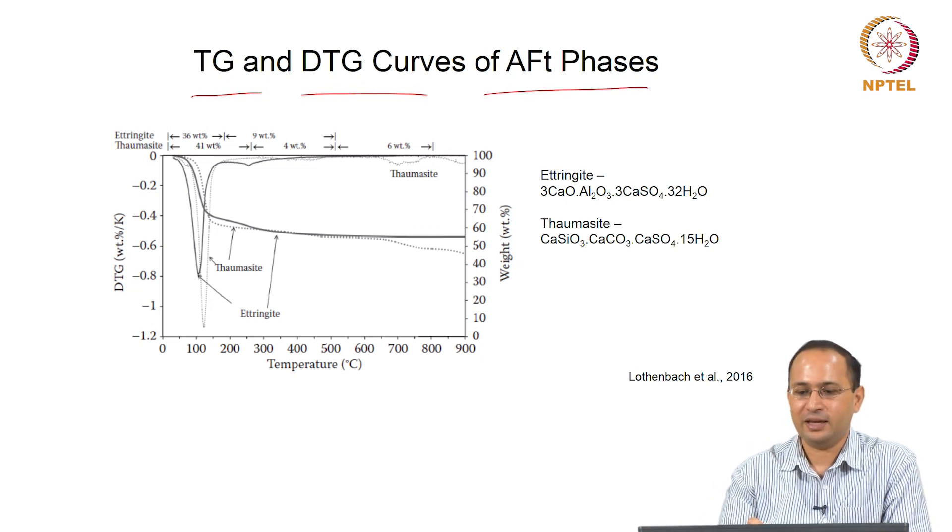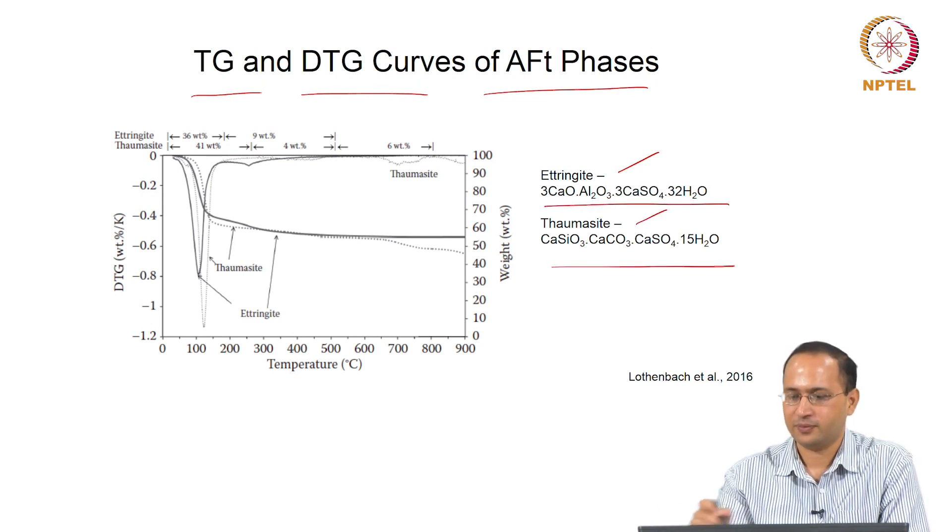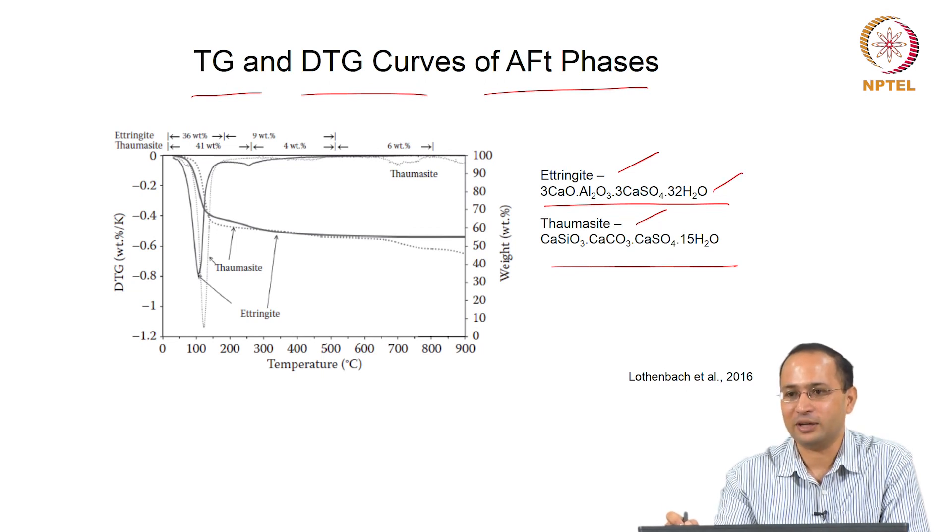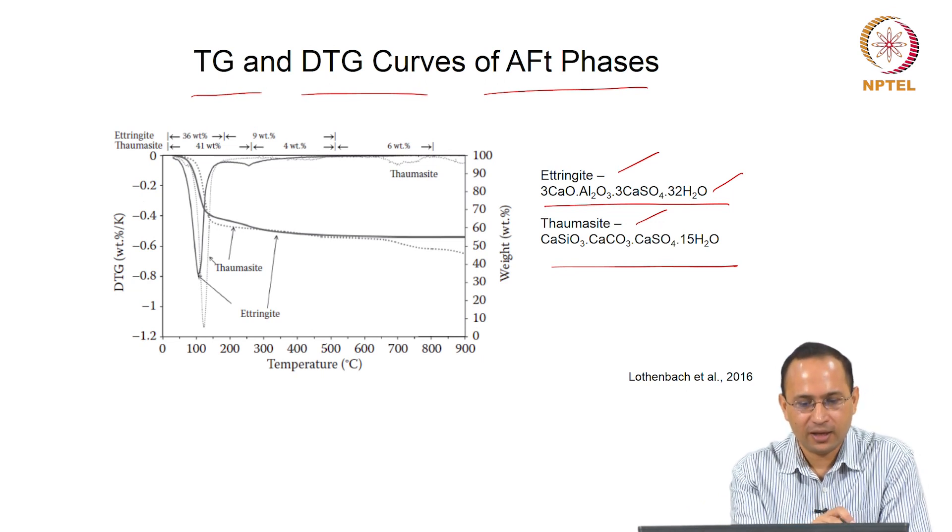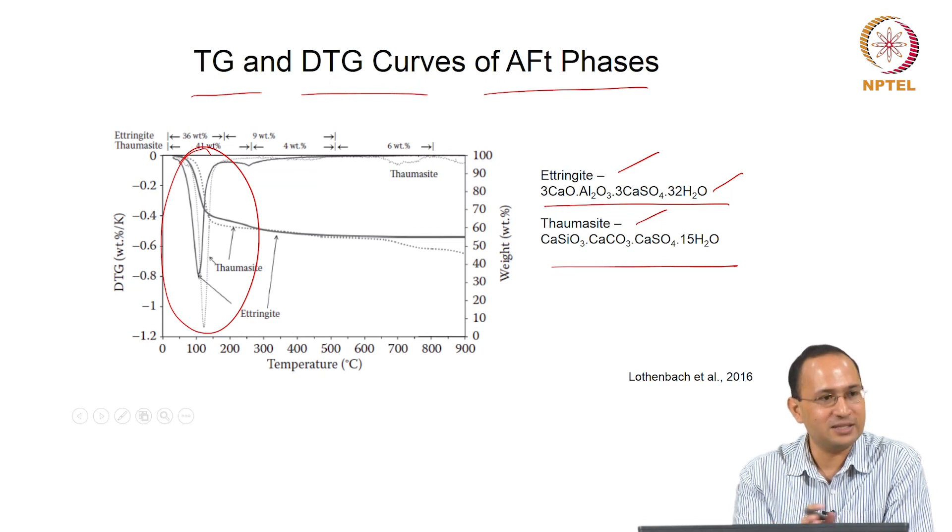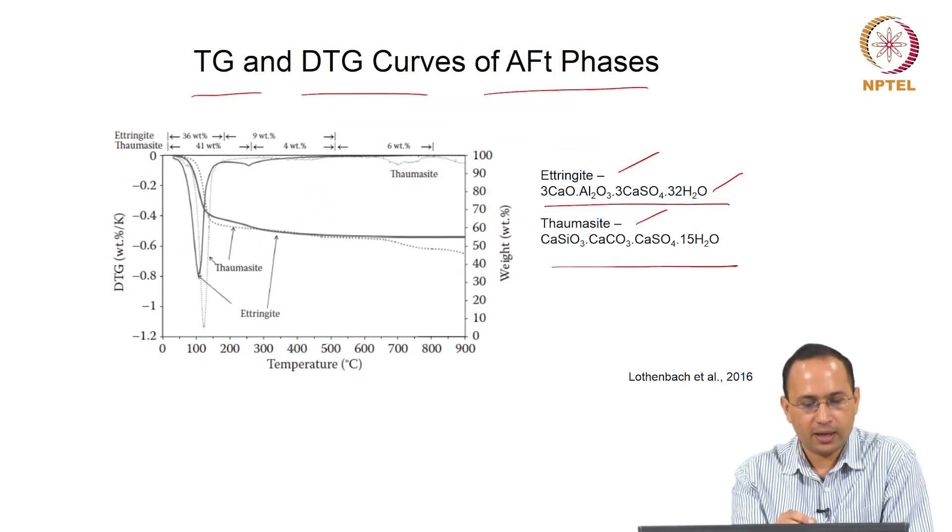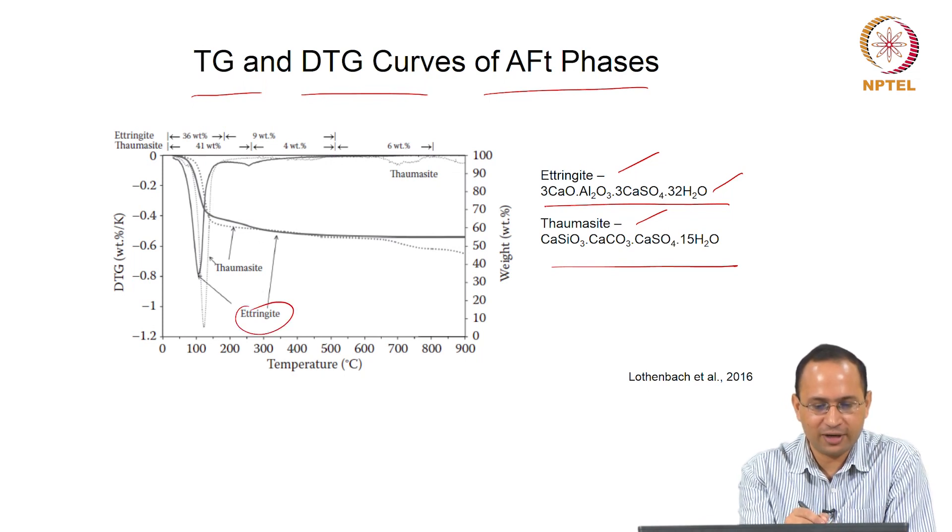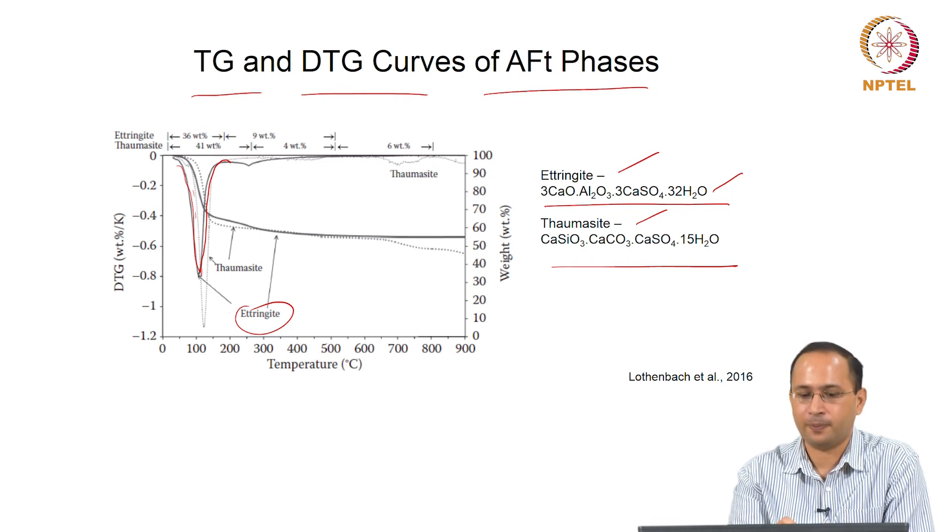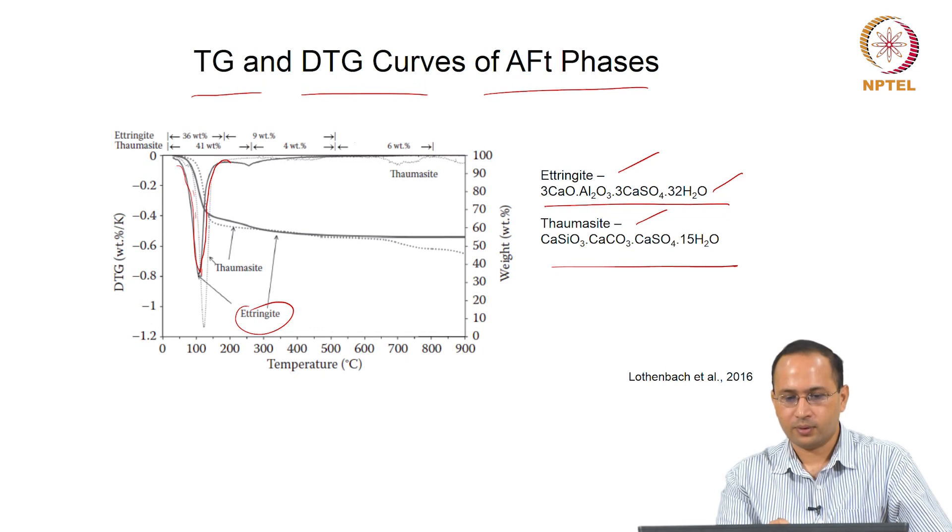Now if you look at the TG, DTG curves for AFt phases, what do we see? AFt phases means in this case we are looking at ettringite and monosulphate. Here is the formula. You can see clearly you have a lot of water. In ettringite you have 32 moles of water. You will lose this water. You can see the primary region where you lose water is in this range, 100-150 degrees Celsius.